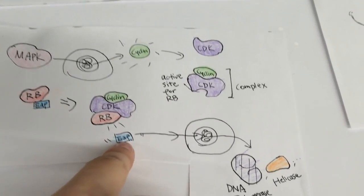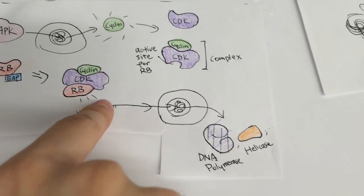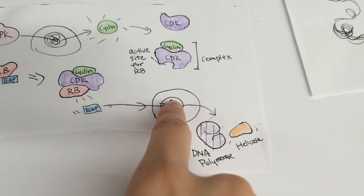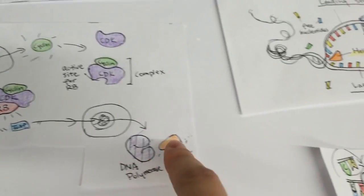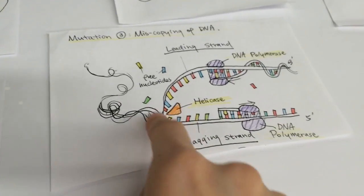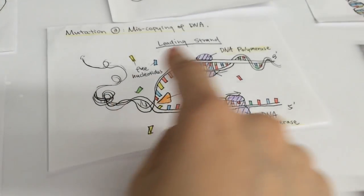E2F, as the transcription factor of various enzymes in charge of DNA replication, such as DNA polymerase and helicase, travels to the nucleus, initiates the production of these enzymes, and triggers DNA replication of the cell.